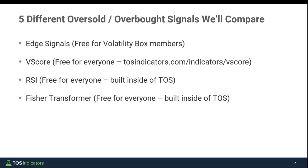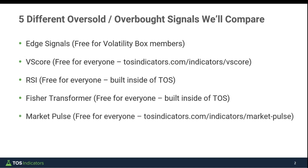After the RSI, we'll move on to the Fisher Transformer. We recently covered this in a tutorial where we built scans for it. In today's video the goal is to identify how effective this oscillator is in giving us signals to catch either the dips or fade the rips. Finally, the last indicator is the Market Pulse, which is also free at tosindicators.com/indicator/market-pulse. It's not always in the conversation for overbought/oversold zones, but I think it's interesting nonetheless.